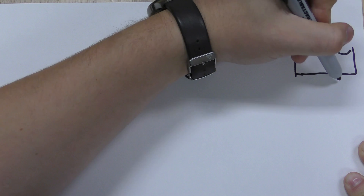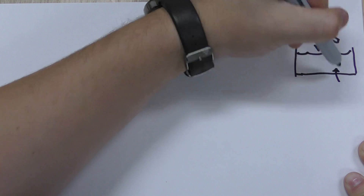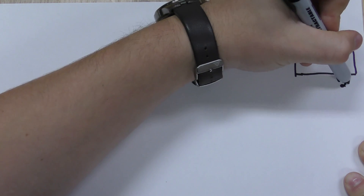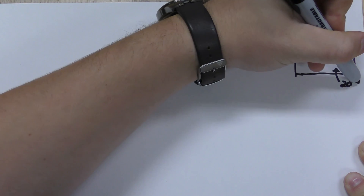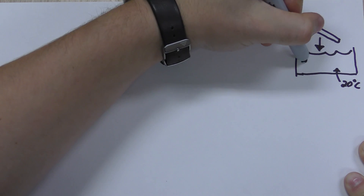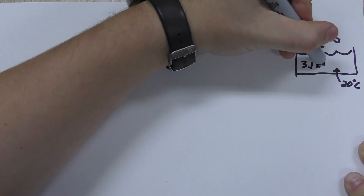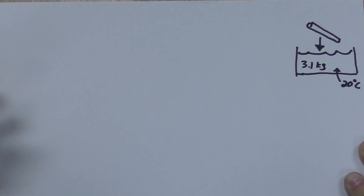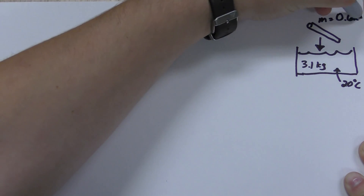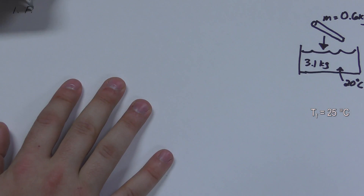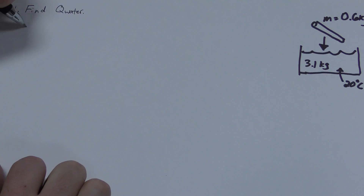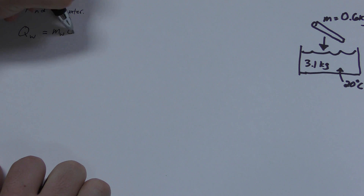Let's say I have a 3.1 kg bucket of water at 20 degrees Celsius, and I drop a 0.6 kg piece of steel into it. After a while, they will both reach equilibrium at 25 degrees Celsius. How would I find the initial temperature of the steel? Well, let's find the energy gained by the water first, or Q sub water.